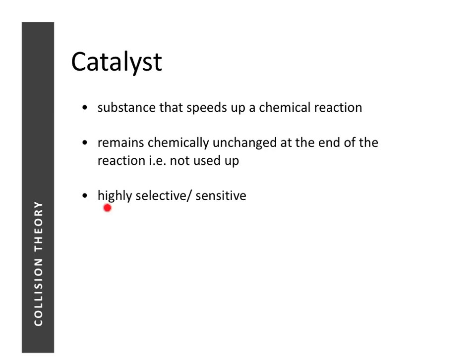Catalysts are also highly selective and highly sensitive. Highly selective means a particular catalyst can only work for one specific reaction — using it for another reaction may not work. Sensitive means a catalyst is very sensitive to reaction conditions; certain catalysts work only over a very narrow temperature range, for example 30 to 35 degrees Celsius, and some are also highly sensitive to pH, which can affect their effectiveness.